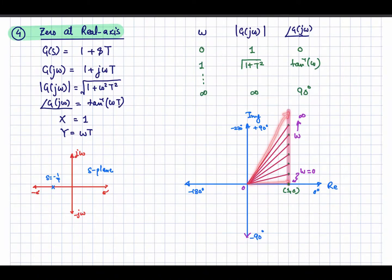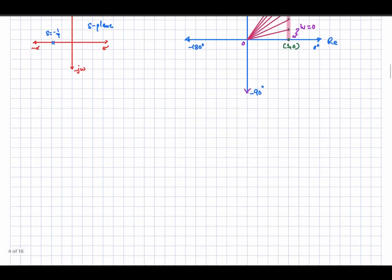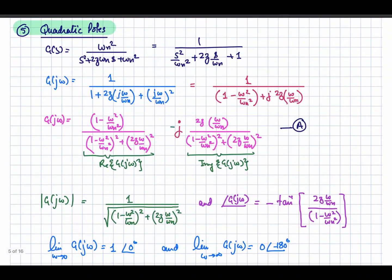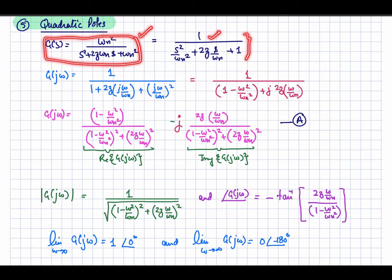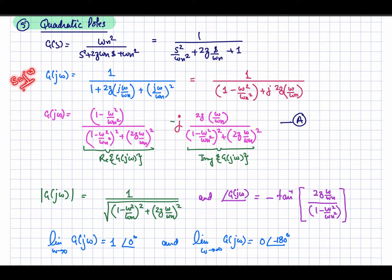Now let's look at a quadratic pole. We discussed the polar plot of a transfer function consisting of a complex conjugate pair of poles. The generic second-order transfer function is given by this equation, which can be rewritten by dividing numerator and denominator by the natural frequency omega_n.